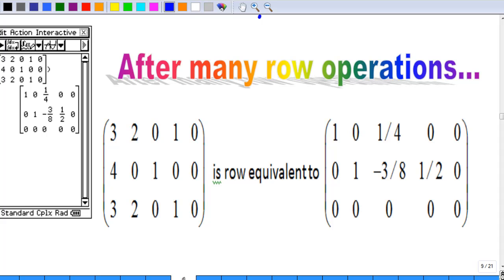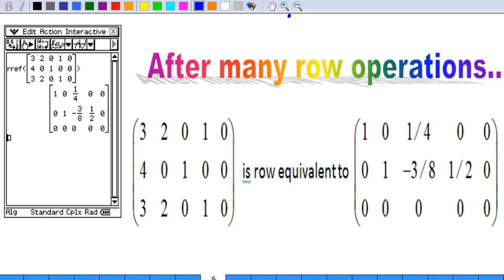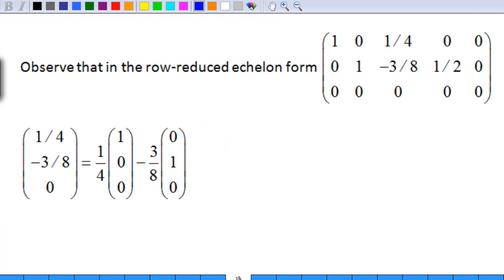So I finally find that the augmented matrix is row equivalent to this row reduced form, which means that the system equation has the same solution. Now observe that in this row reduced form, we find that column 3 is equal to 1 quarter times column 1, and minus 3 over 8 times column 2.